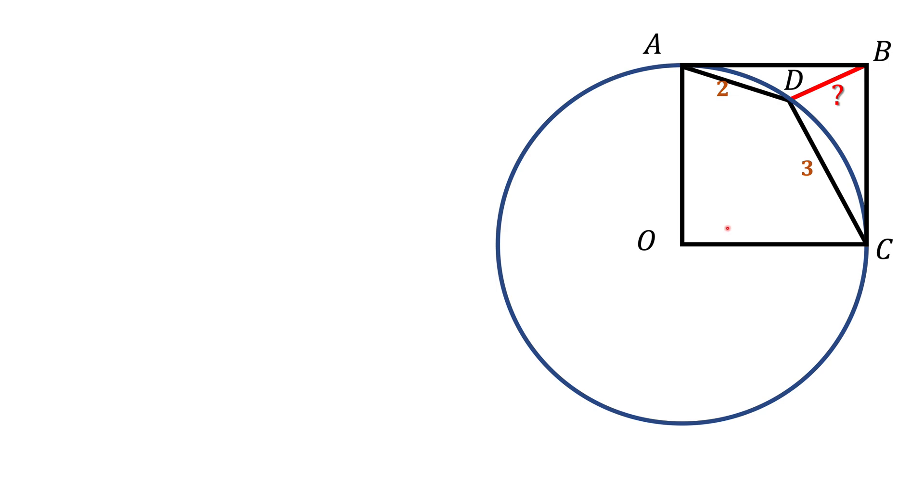There are different ways we can solve this problem. One way we can easily see this angle ADC is an inscribed angle. An inscribed angle theorem tells us that inscribed angle has a measure which is half of the measure of the corresponding central angle and corresponding central angle is this angle right here.